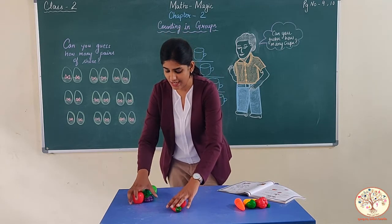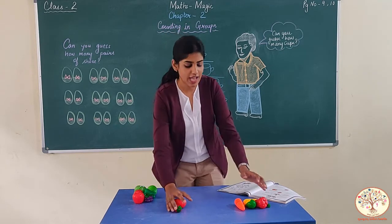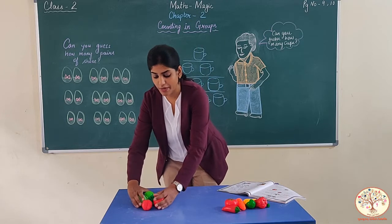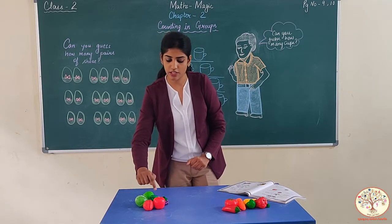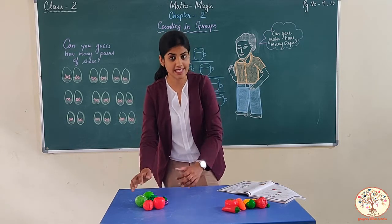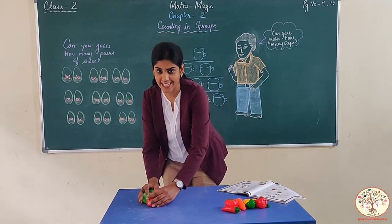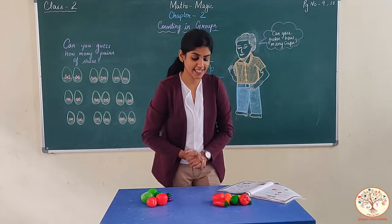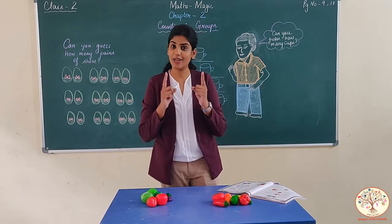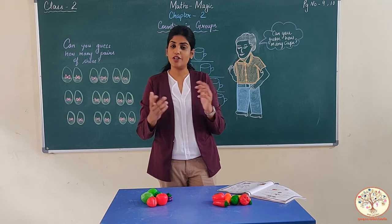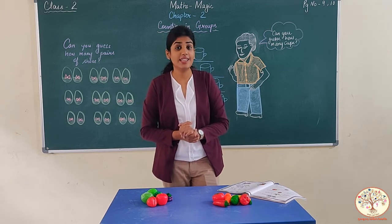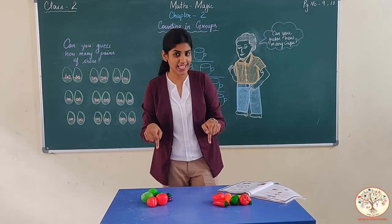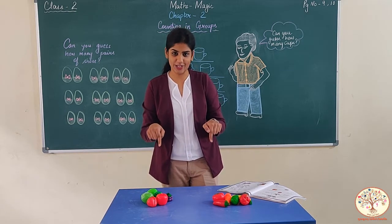Now let's take another group. How many objects are here? 1, 2, 3, 4, 5, 6. 6 plus 6 equals 12. So, kaunsa zyada time-taking nahi hai? Counting in groups.